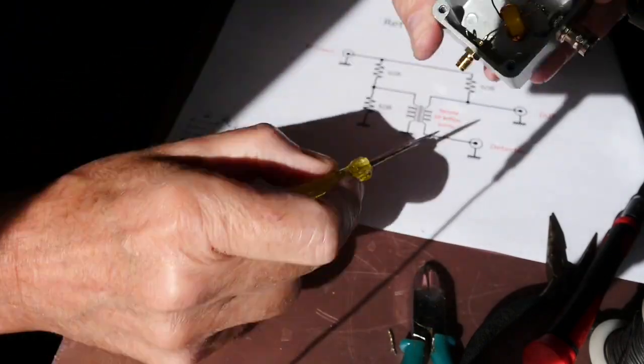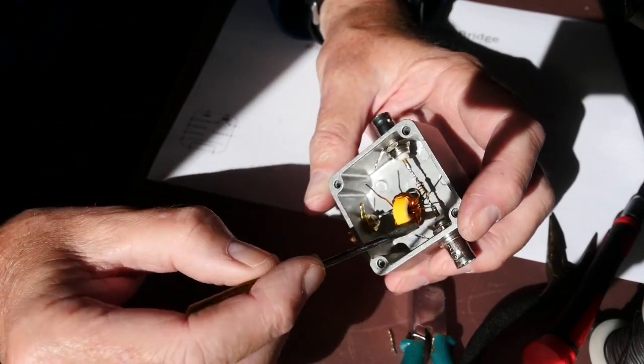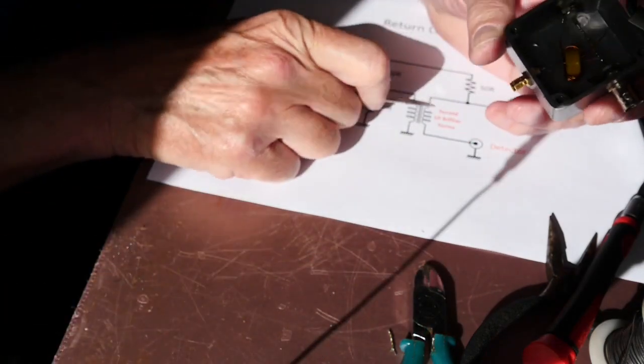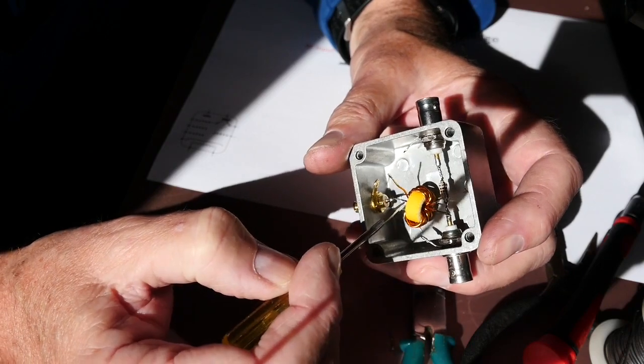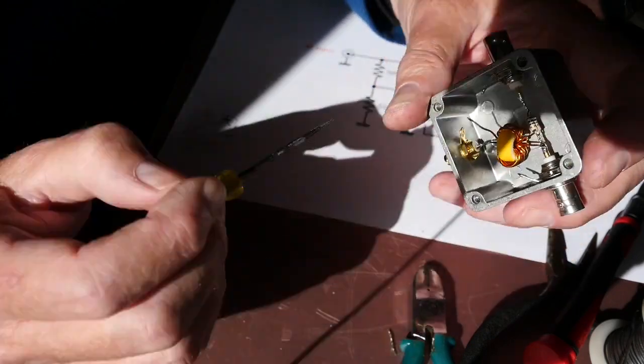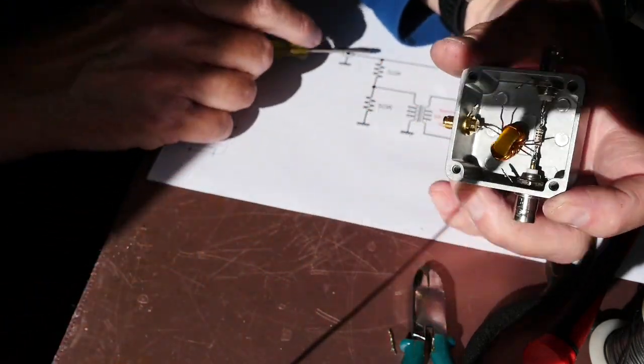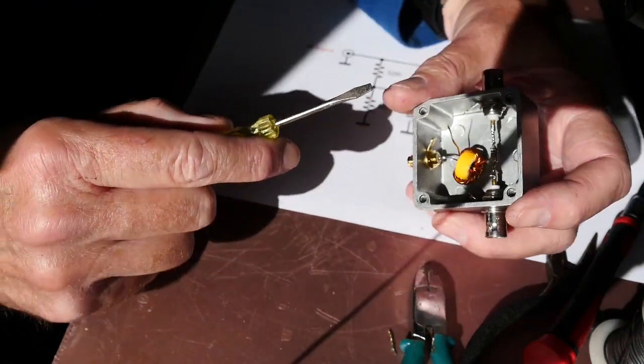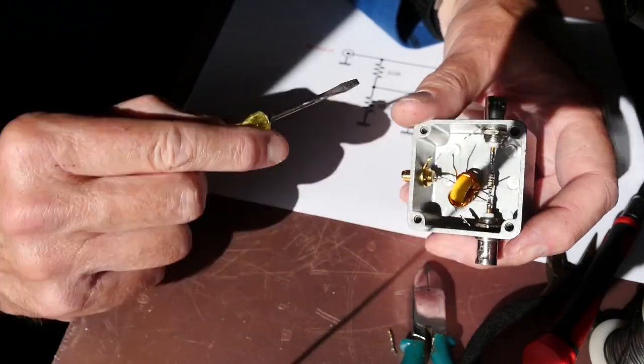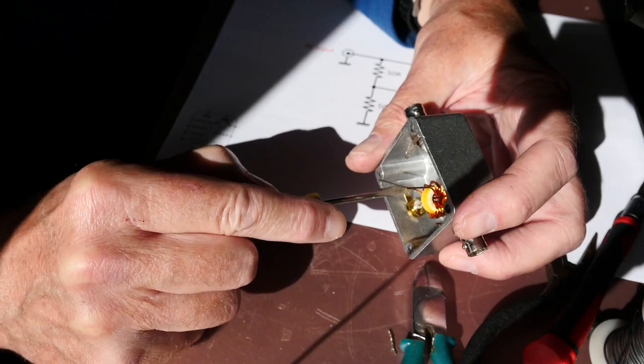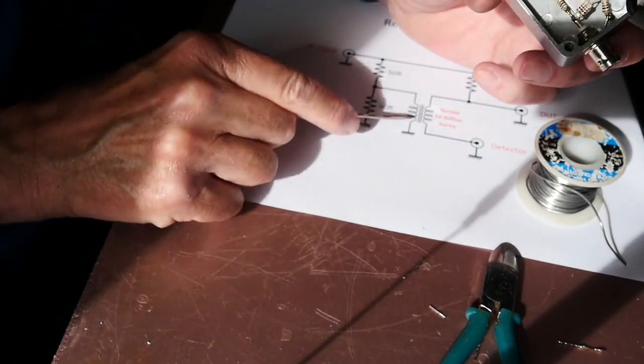Okay so I've got the 50 ohm resistor, well the pair of 100 ohm resistors mounted between the input and the device under test sockets there. And I've now also mounted the first winding of the toroid here between the device under test and the detector. And I've got those windings just about as straight as I can possibly get them, come straight out that socket and straight onto the SMA socket there. So now next bit of work is to put these two 50 ohm resistors as a bridge, attach one end of the coil to that point there at the midpoint between the resistors.